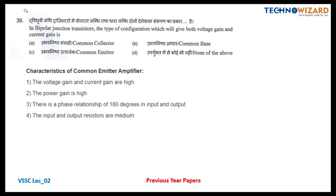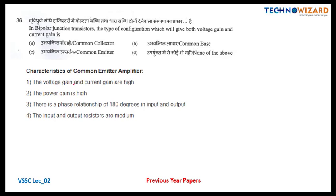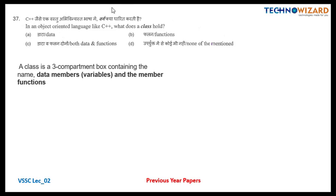Question number 36: in a BJT, which configuration has both voltage gain and current gain? Common emitter is the only configuration that has both high voltage gain and high current gain, with high power gain, 180-degree phase shift between input and output, and medium input/output resistance. Question number 37: in an object-oriented language like C++, a class holds both data members and member functions — option C.